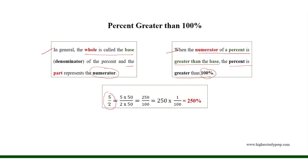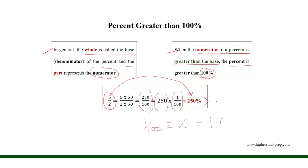For example, if we consider 5 over 2, the equivalent fraction with 100 in the denominator is 250 over 100, which equals 250 times 1 over 100, where 1 over 100 is equivalent to 1%. Therefore, 5 over 2 equals 250%, which is greater than 100%, where the numerator 5 is greater than the base or denominator 2.